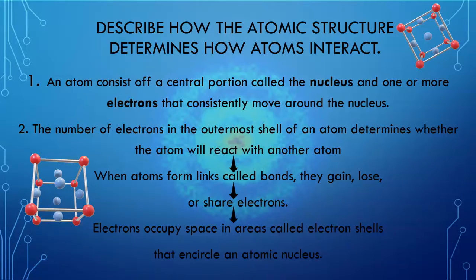When atoms form links called bonds, they gain, lose, or share electrons. Electrons occupy space in the areas called electron shells that encircle the atomic nucleus.